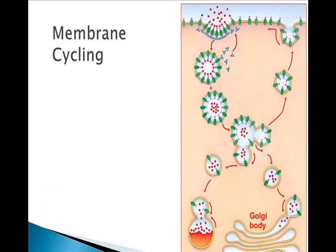Even as exocytosis and endocytosis disrupt the plasma membrane, the rates are such that the plasma membrane is continually replaced. What comes in and takes out part of the plasma membrane gets replaced by exocytosis. For example, in neurotransmitter release, an episode of exocytosis is immediately followed by counterbalancing endocytosis, and clinical data shows this happens constantly.